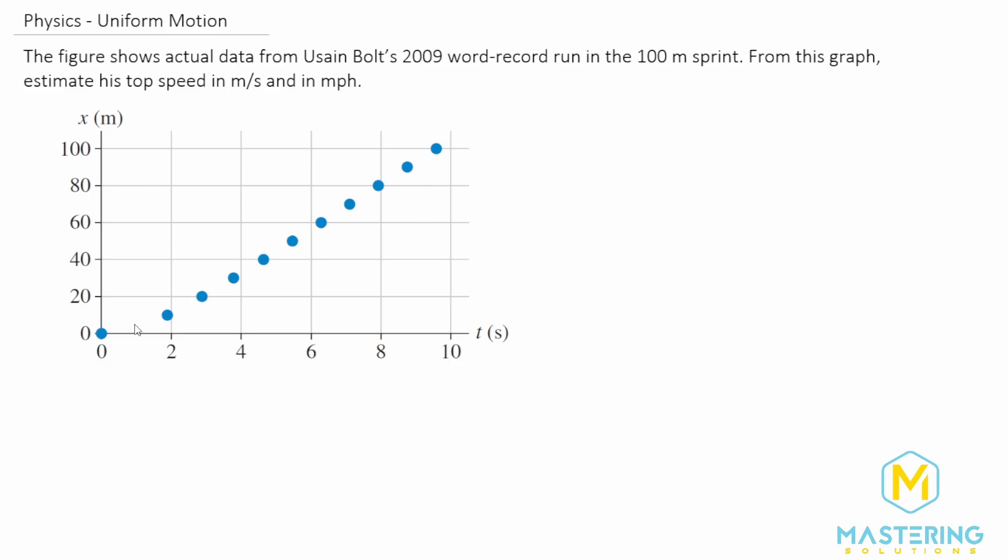So if we look at the graph, we have two kind of distinct slopes here. If you remember from a position versus a time graph, the slope of the graph gives you the velocity. So we have one velocity kind of like that, and then another velocity or slope like this. So the steeper the slope is, the faster the velocity.